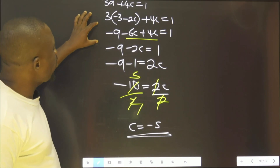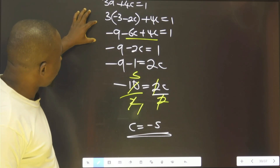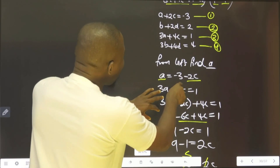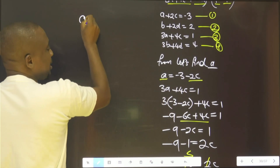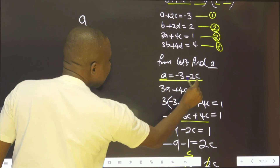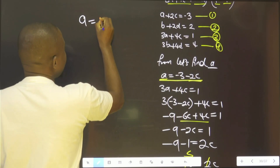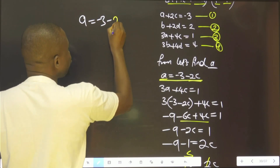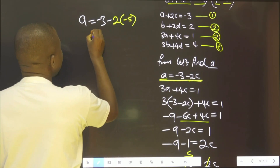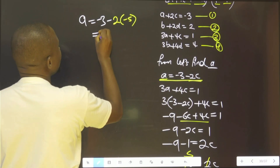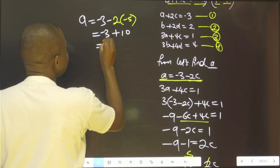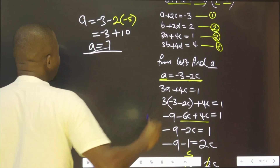So that is the first element we are getting: c = −5. With this, we go back to find a. We now know c is −5, so a = −3 − 2(−5) = −3 + 10, which is 7. Therefore, a = 7.